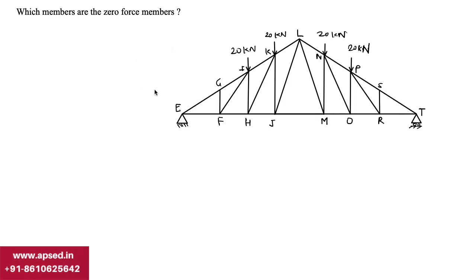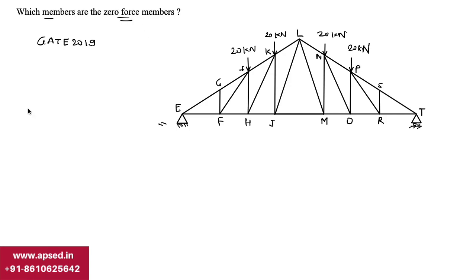In this video, let's look at a question from GATE 2019 to understand zero force members in a truss. A zero force member, as the name suggests, is a member in which the axial force is zero. In a truss, all members carry only axial force, so if that axial force is zero, we call it a zero force member.